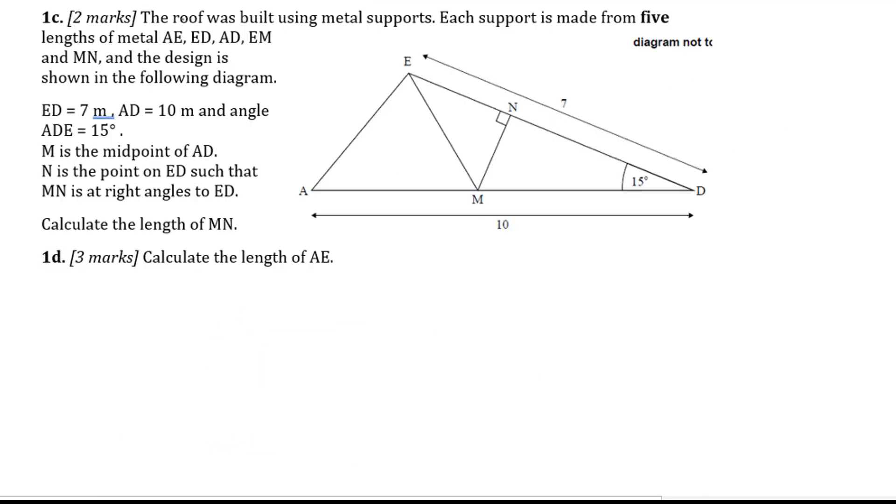Let's go to 1C. The roof was built using metal supports. Each support is made from five lengths of metal: AE, ED, AD, EM, and MN. And the design is shown in the following diagram. ED equals 7 and AD equals 10. And the angle ADE equals 15 degrees. M is the midpoint of AD. In other words, this is 5 and here is 5. N is the point on ED such that MN is at right angles to ED. So we know this is a right angle. Calculate the length of MN.